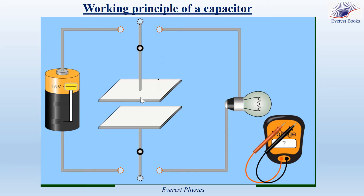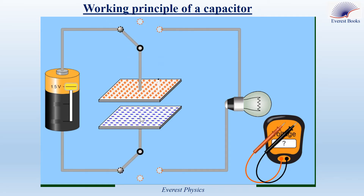Observe what will happen when we connect the upper plate of the capacitor to the positive pole of the battery and the lower plate to the negative pole using this switch. We observe that the upper plate loses a certain number of electrons, while the lower plate gains the same number of electrons, because the positive pole of the battery attracts some of the free electrons on the upper plate, so this plate becomes positively charged, and since the lower plate gains electrons, it becomes negatively charged.